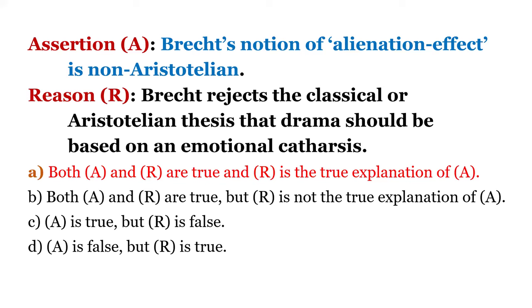In a sense, Brecht's idea of the alienation effect in his Epic Theatre is non-Aristotelian because he doesn't want his audience to become one with the setting or characters. You have to distance yourself from the play and think about the problems or issues discussed. This is exactly opposite to the Aristotelian idea of drama, where the audience should feel pity and fear for the characters — the concept of catharsis.